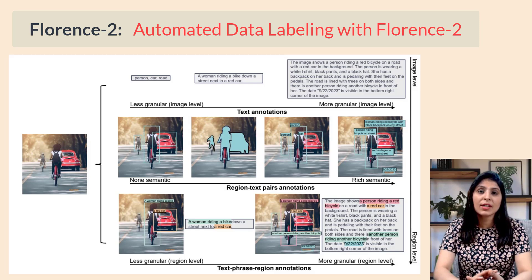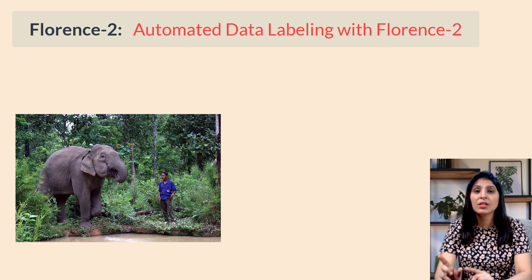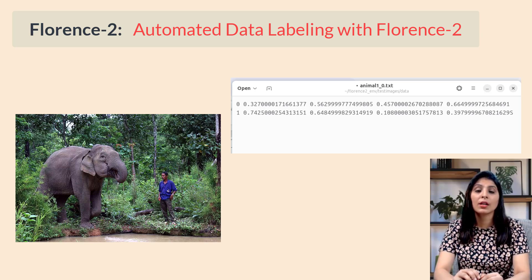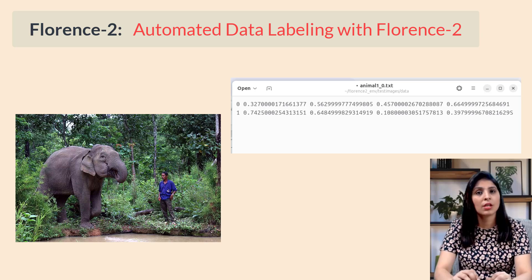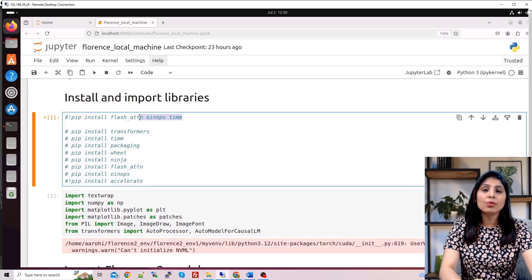After that I'll show you how we can perform auto labeling using Florence-2. Suppose you have a folder where you have lots of images and you want to annotate those images for object detection tasks. For a given image you'll get an annotation file with a class ID and bounding box coordinates. I'll show you how to auto-annotate images and convert those annotations into YOLO format.